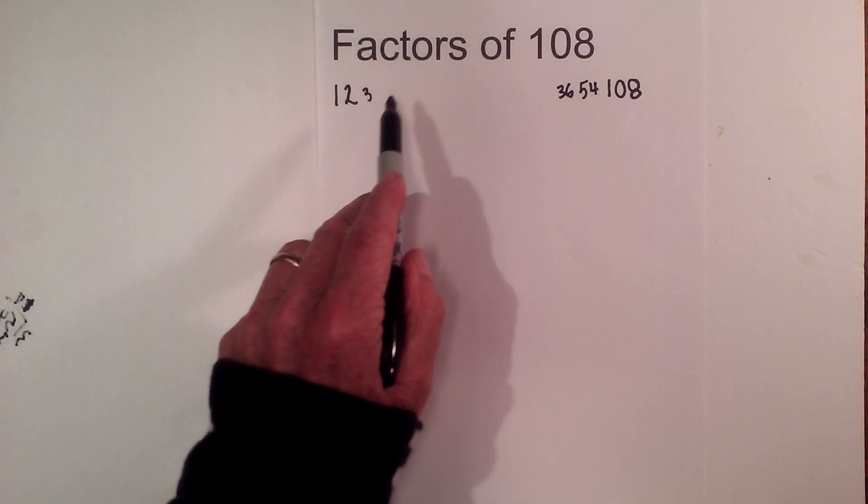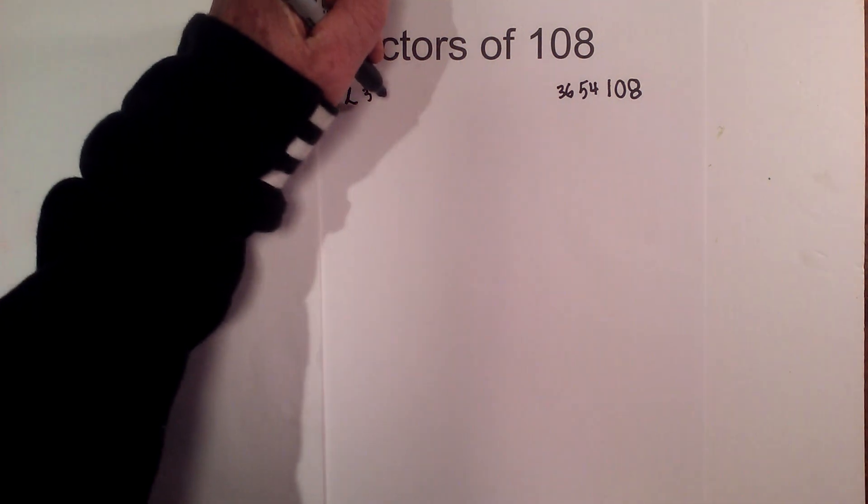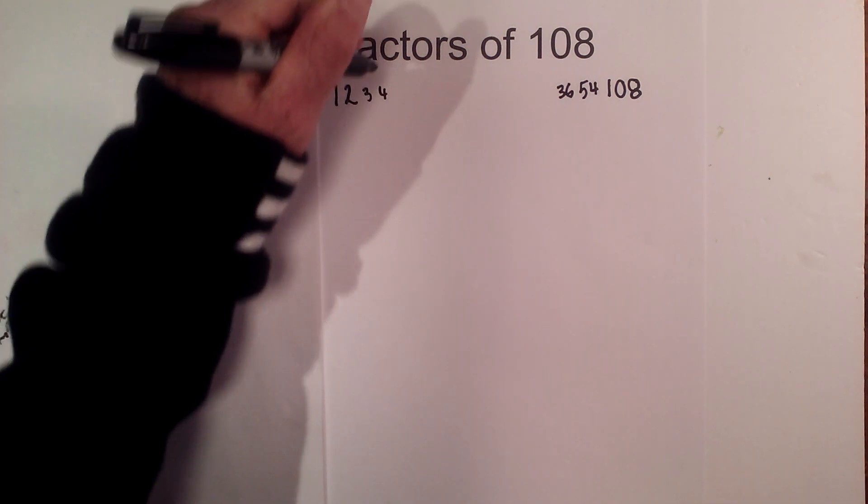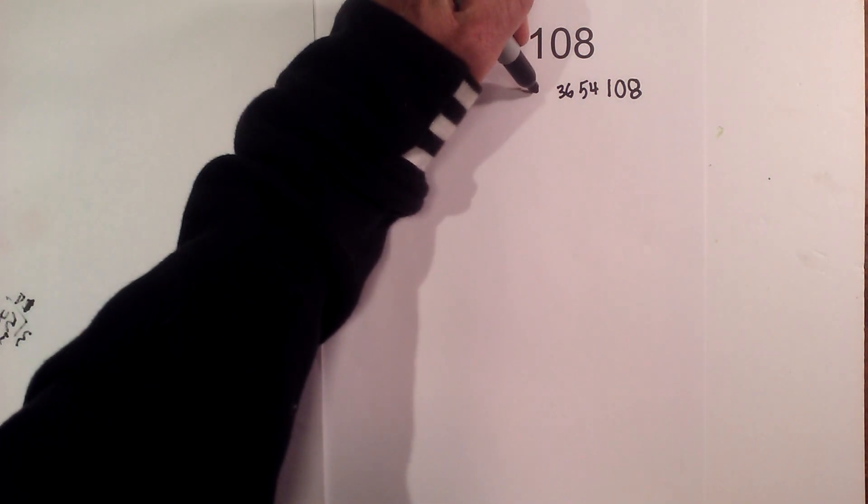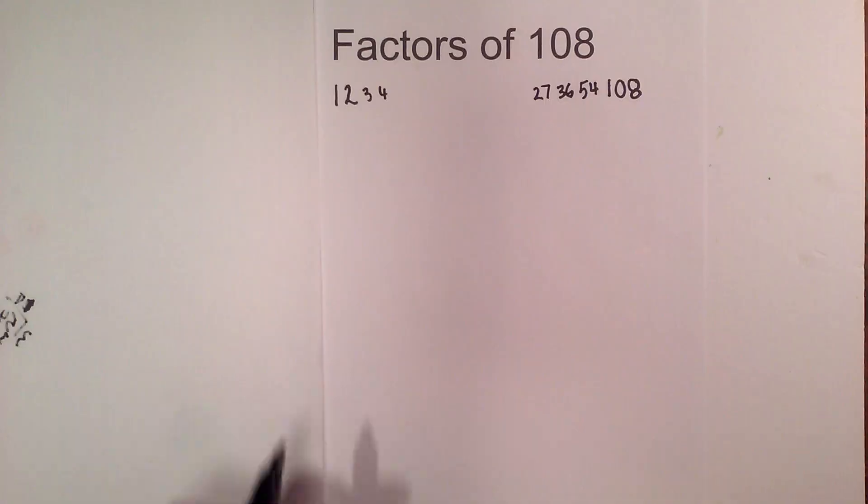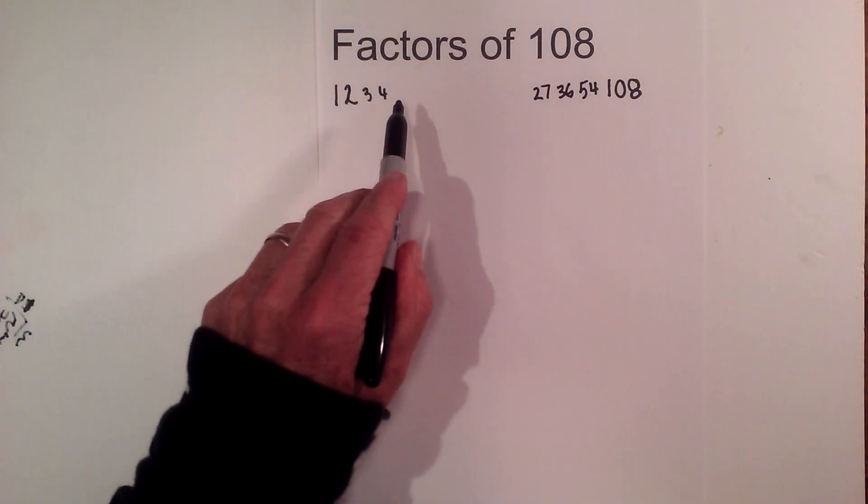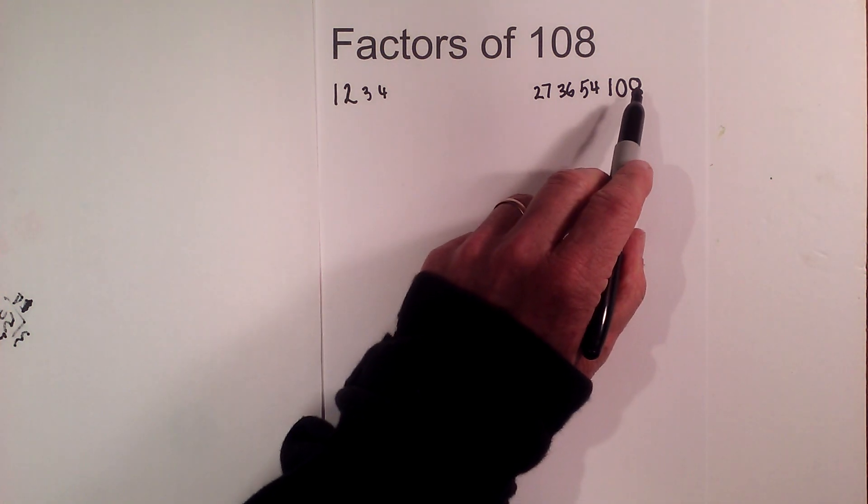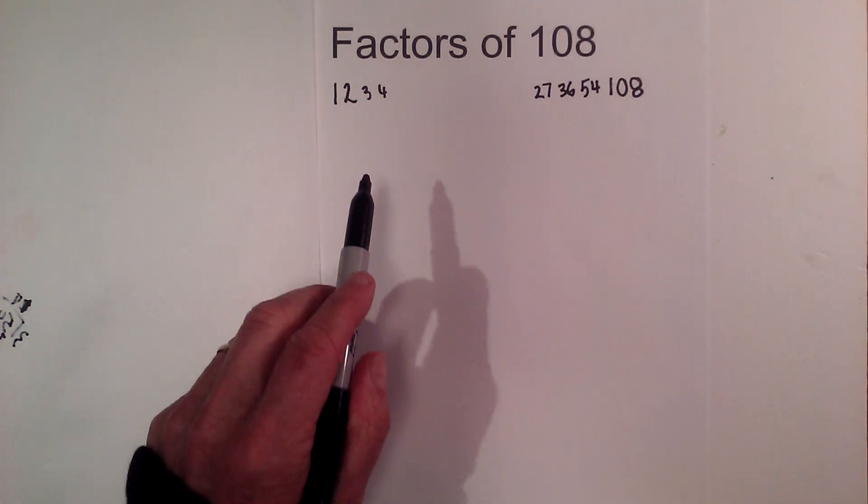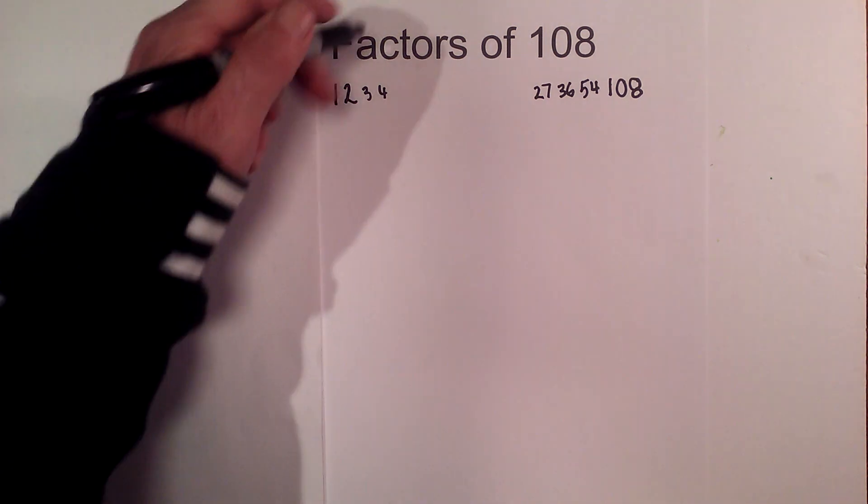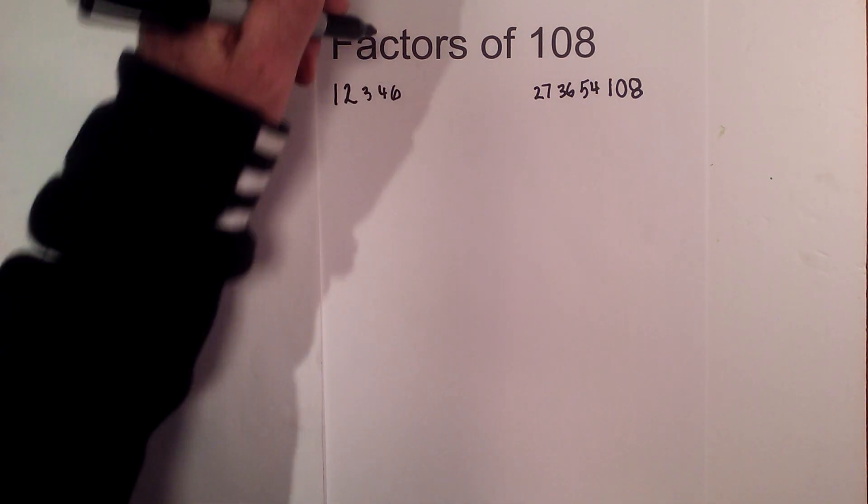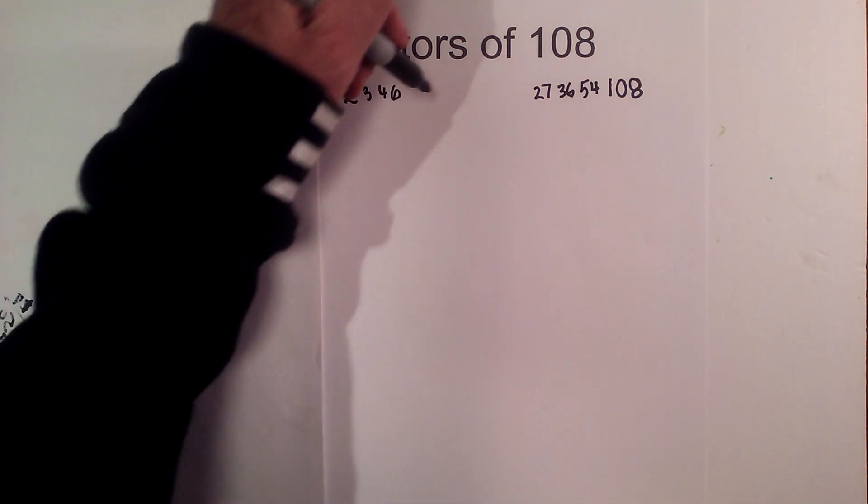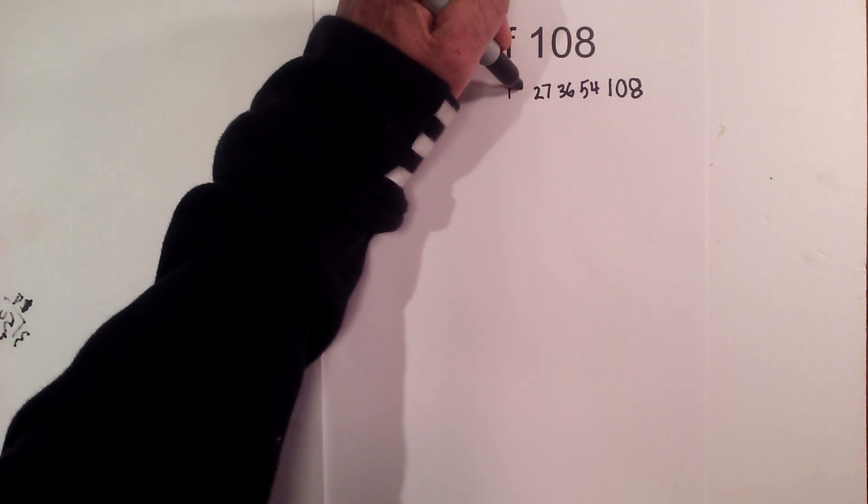And I continue. Does 4 go into 108? Yes, 4 times 27 equals 108. Does 5 go into 108? No, 5 does not, and I know that because it doesn't end in a 5 or 0. Does 6 go into 108? Yes it does. 6 goes into 108 eighteen times.